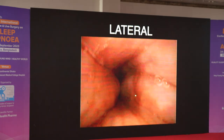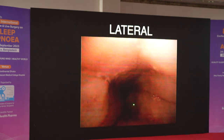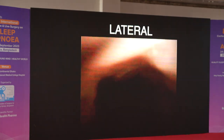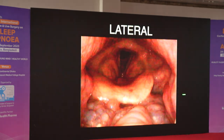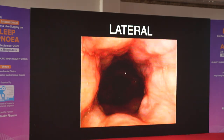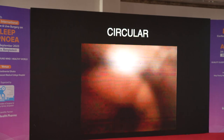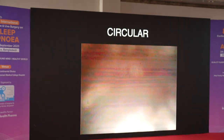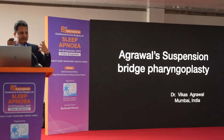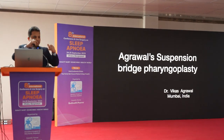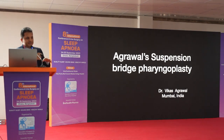The lateral collapse is nothing but the lateral part of the palatopharyngeus muscle — the vertical part where it collapses. Looking at these structures: the uvula, the medial part of the palatopharyngeus, the tonsil, and the lateral part of the palatopharyngeus. So ultimately, whether it is AP or lateral collapse, it is the palatopharyngeus muscle. Circular collapse is a combination of both. By and large, you are tackling the palatopharyngeus — the medial or lateral part.